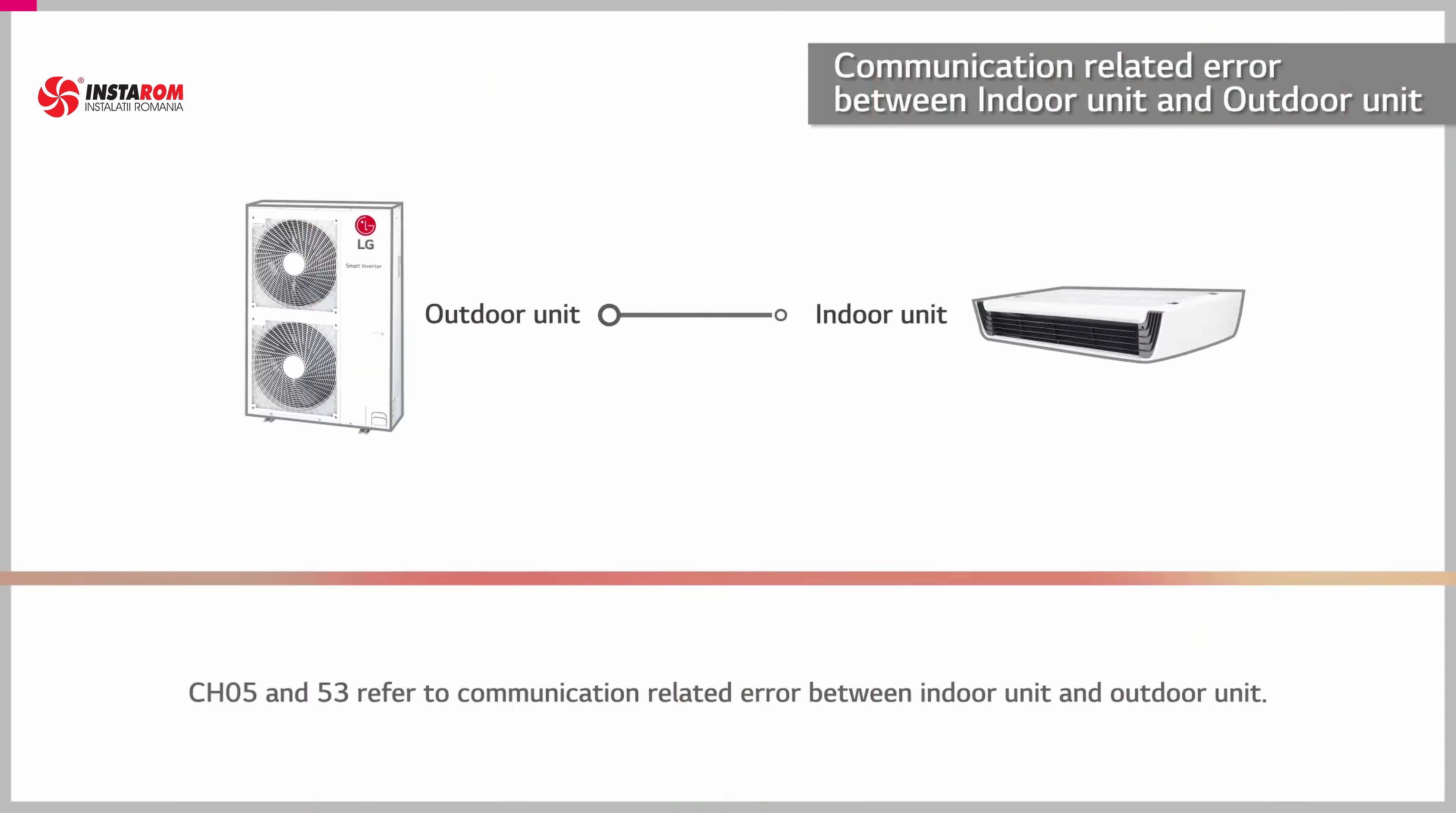Channel 5 and 53 refer to communication errors between the indoor and outdoor units. Channel 5 occurs if the indoor unit cannot receive a signal from the outdoor unit,